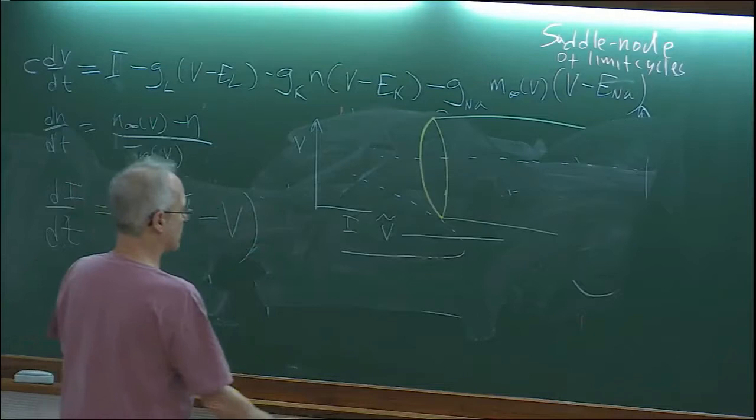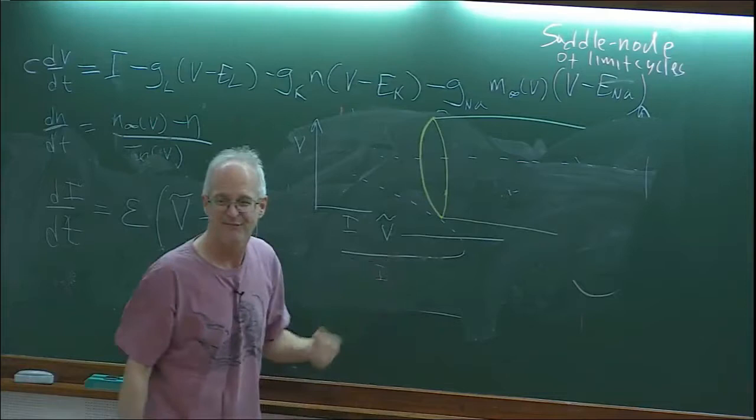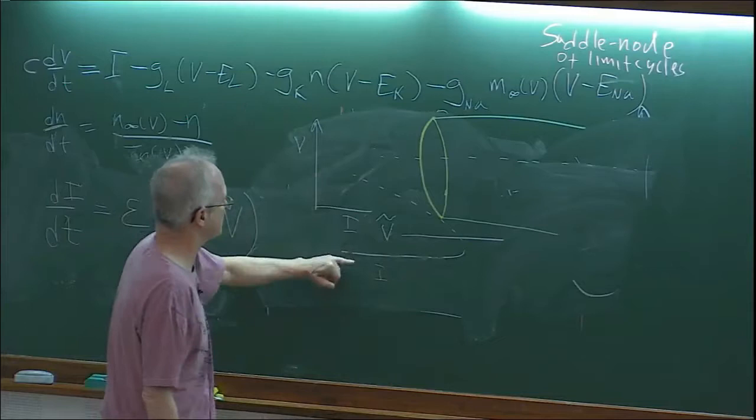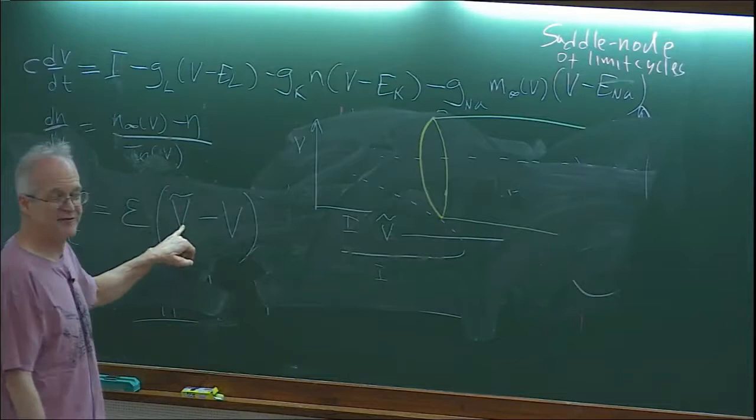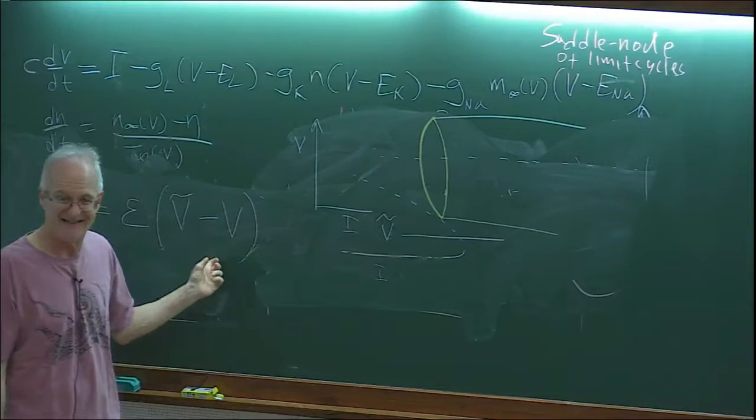Let's see what happens in this case. Suppose I start with I down here — this is the IV axis. I is below V tilde, so V is below V tilde. And so dI/dt equals V tilde minus V, which is going to start to increase, because V is less than V tilde.